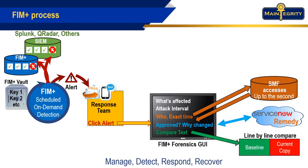If there's no approved change record, we might invoke our standard compare program. If it was a parameter that changed, something that can be seen by a human, we invoke the compare program to compare the baseline copy to the current copy — that tells us whether it was just a comment line that was changed or whether there is something more sinister at work. At the same time and in parallel, we could be escalating through your SIEM processing if you have that implemented.